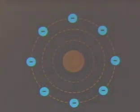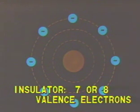By comparison, poor conductors or insulators, such as glass, have many more valence electrons than conductors, most commonly seven or eight.